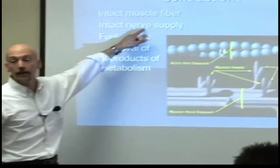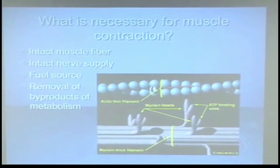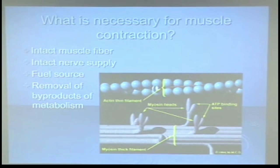That medial branch of the posterior primary division also goes to very important proprioceptive muscles in the lumbar spine — the multifidus and rotatores. If I take information away from there, I have no feedback going to my brain telling it where my lower back is in space, and that's how injury can occur. So intact nerve supply is critical, and compression neuropathies exist all over the place.